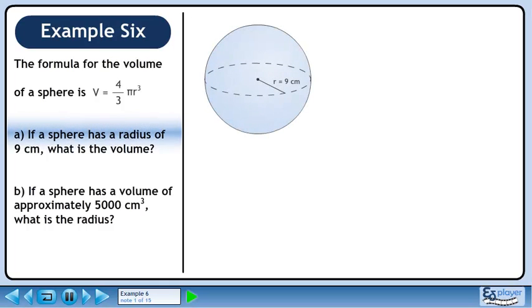The formula for the volume of a sphere is V equals 4 over 3 pi r cubed. In part a, if a sphere has a radius of 9 centimeters, what is the volume?